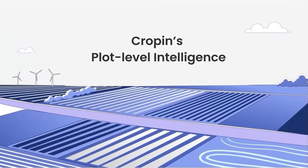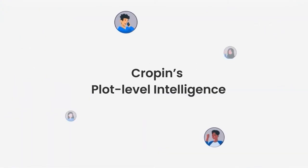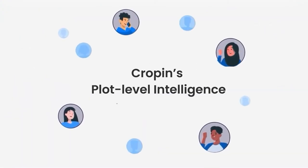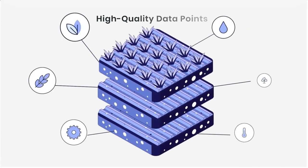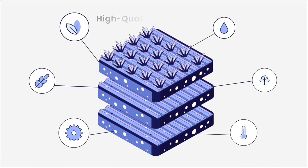Cropin's plot-level intelligence delivers business intelligence to enterprises in the form of aggregated plot-level insights. It layers high-quality data points from multiple sources to trigger timely interventions.